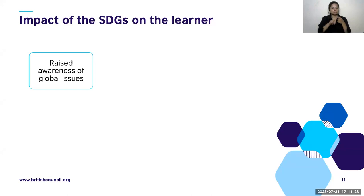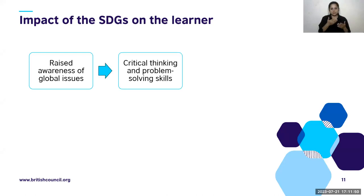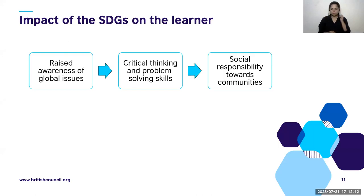The first impact is raised awareness of global issues. For example, we have very frightening effects of climate change: flooding all over North India, soaring temperatures in Europe, an ongoing war in Ukraine. By raising these issues in the classroom, there is raised awareness. We can also look at critical thinking and problem-solving — raising awareness and developing 21st century skills in our learners, thinking of solutions and innovations to these problems within their own schools and neighborhoods.